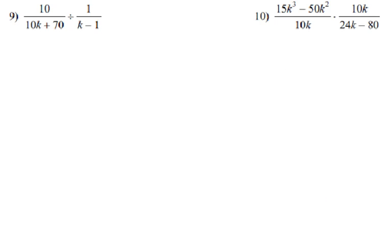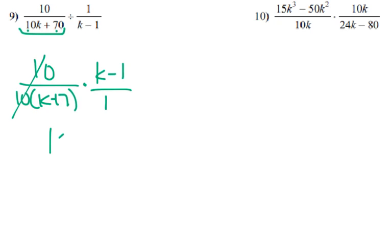Just keep on going. We can probably simplify that, so we get 10 over, you can pull a 10 out of that, right? 10 times k plus 7. And that we flip to times k minus 1 over 1, which the 10s cancel, but that's pretty much it. So we get k minus 1 over k plus 7.